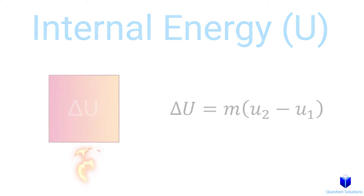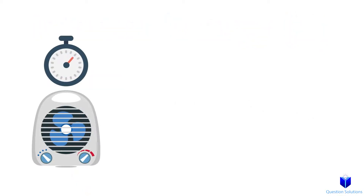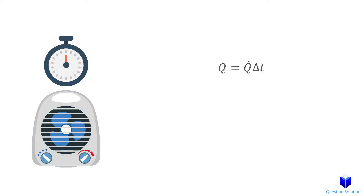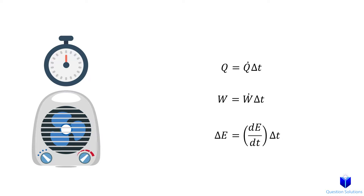If we have a situation where heat is transferred for a certain amount of time — for example, a heater being turned on for 10 minutes, or power supplied for 30 minutes — then we can use quantities for a time interval. So we have heat transfer, work transfer, and change in the total energy of the system for a certain time interval.